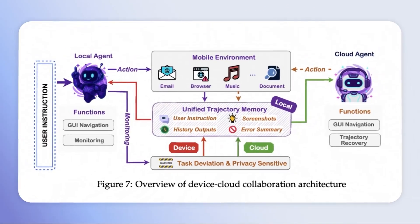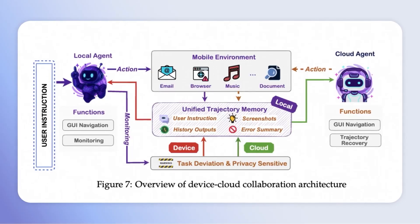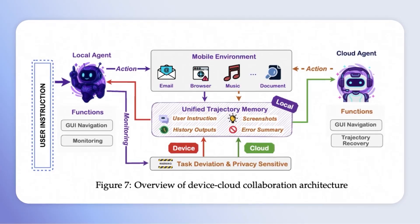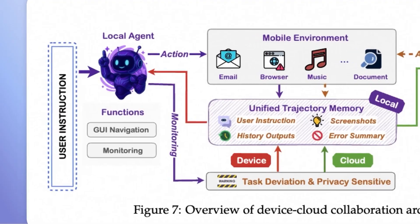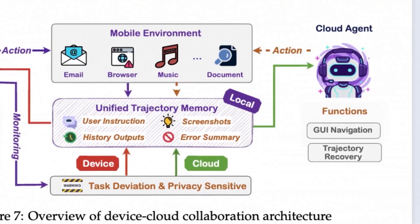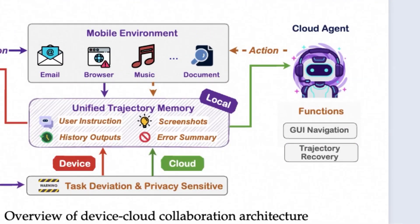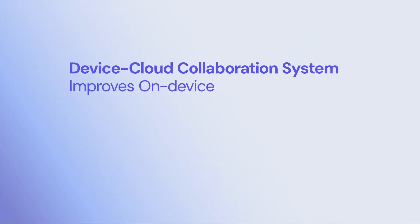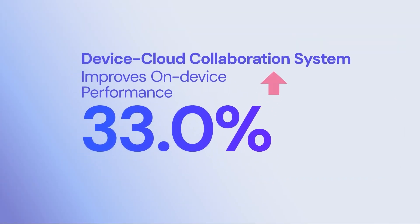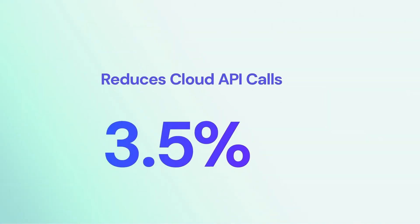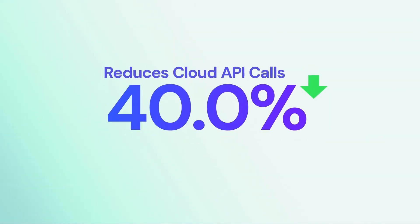High performance, no network dependency, and strong privacy protection — MyUI delivers through its native device-cloud collaboration system. The lightweight local agent handles execution and monitoring, while the cloud model is switched in only when execution deviates from user intention. This system improves on-device performance by 33% and reduces cloud API costs by over 40%.